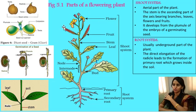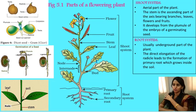The shoot system develops from the plumule. The shoot system consists of stem, leaves, flowers, fruits and buds. The main ascending axis of the plant is known as the stem. The stem can be differentiated into nodes and internodes. It also bears branches, leaves, flowers and fruits.